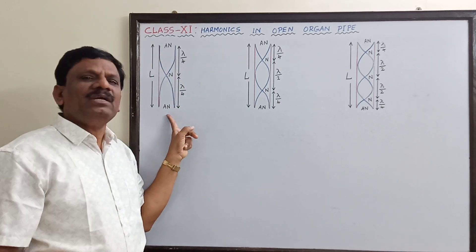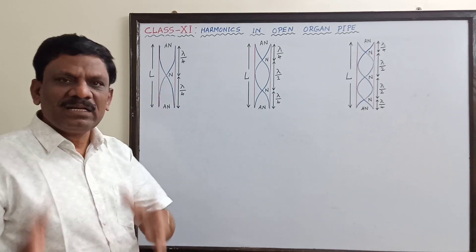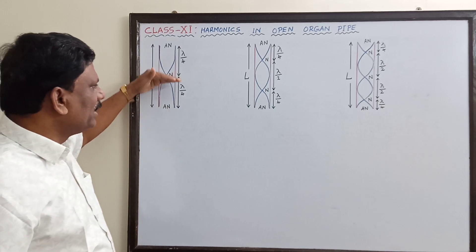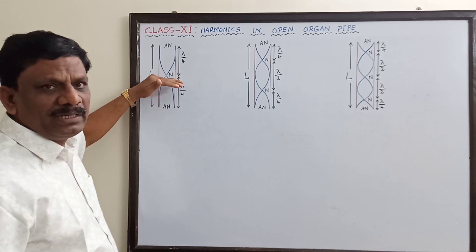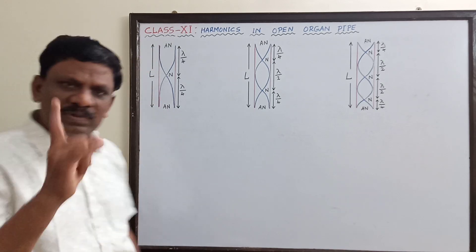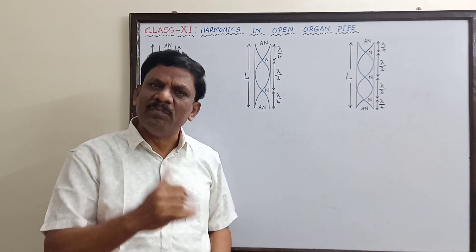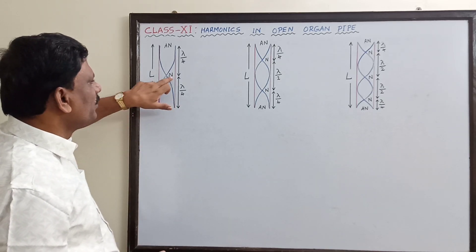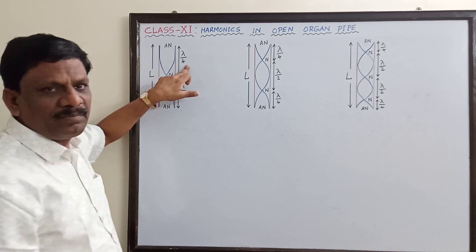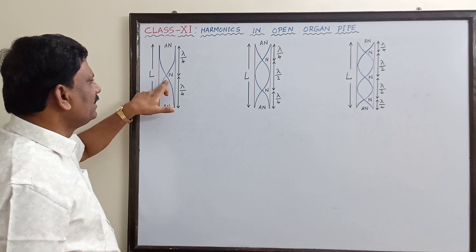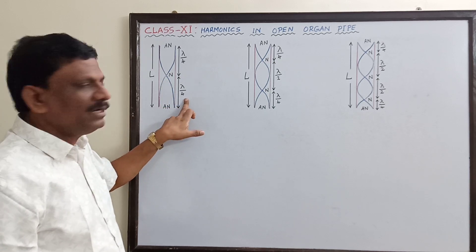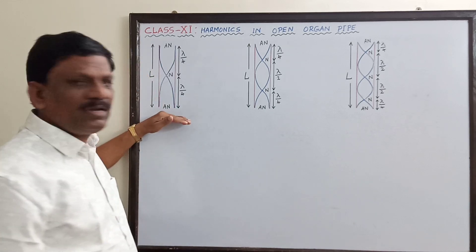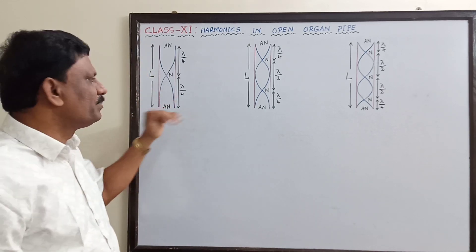In between two antinodes a node must be formed. Under this condition, the minimum possible mode of vibration is the formation of half a loop at the bottom half of the tube and half a loop in the upper half of the tube — so one loop is being formed, half on top and half at the bottom. This minimum frequency with which vibration takes place in this pipe is called the fundamental frequency.